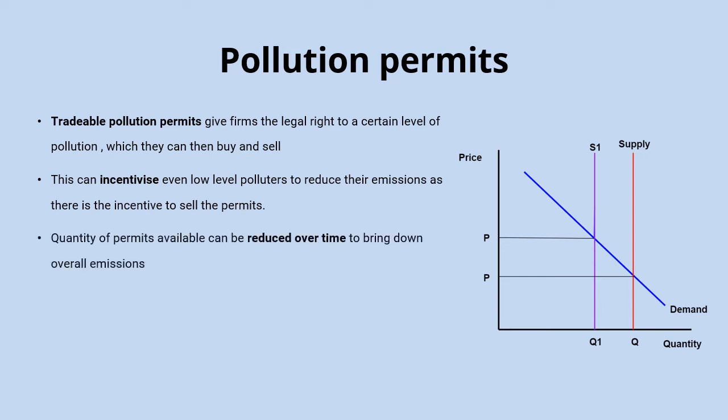As part of the scheme, the quantity of permits can be reduced over time to bring down the overall level of emissions. You can see this on the diagram where the supply of permits is at a fixed level — that's why the supply curve is a vertical line. Over time you can reduce that supply of permits, pushing that curve further to the left, which will force up the price of the remaining permits and reduce total pollution, but also further incentivize firms to bring down their emissions because they can sell their permits at a higher price.